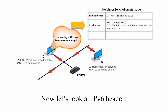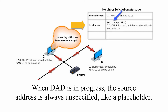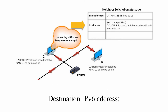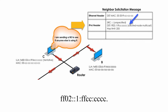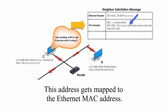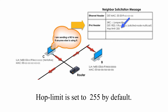Now let's look at the IPv6 header. The source address is ::, which is the unspecified IPv6 address. When DAD is in progress, the source address is always unspecified, like a placeholder. The destination IPv6 address is the Solicited Node Multicast address for Computer C's link-local address. This address gets mapped to the Ethernet MAC address — basically, any other device sharing the last 24 bits with Computer C would get this message. Hop limit is set to 255 by default.